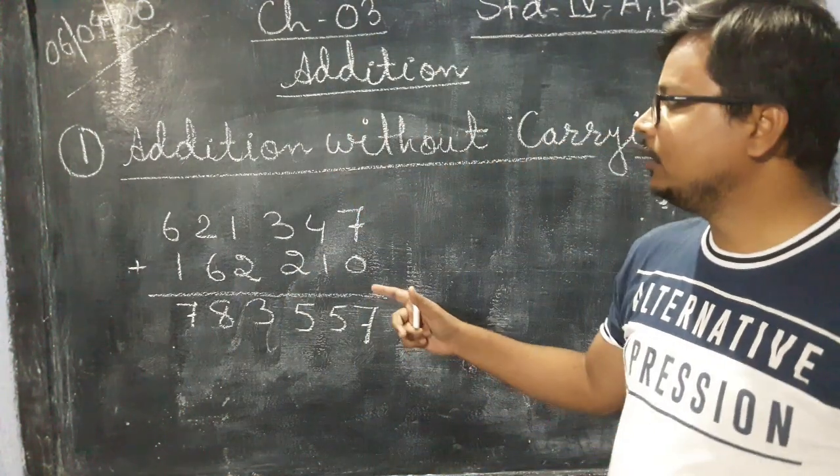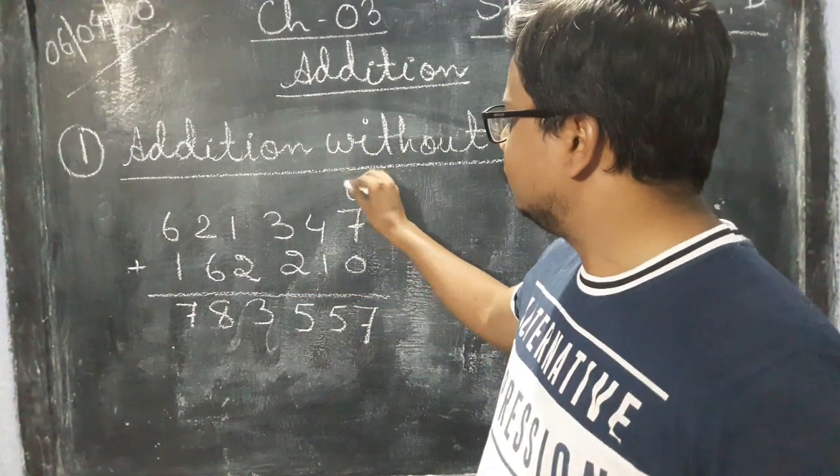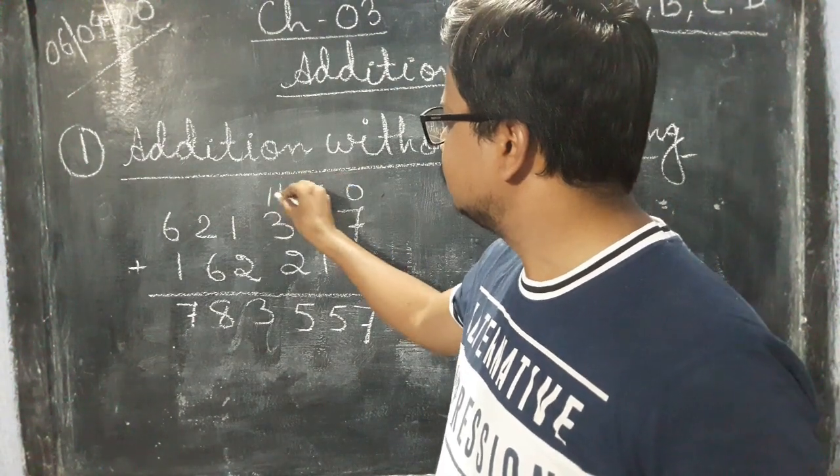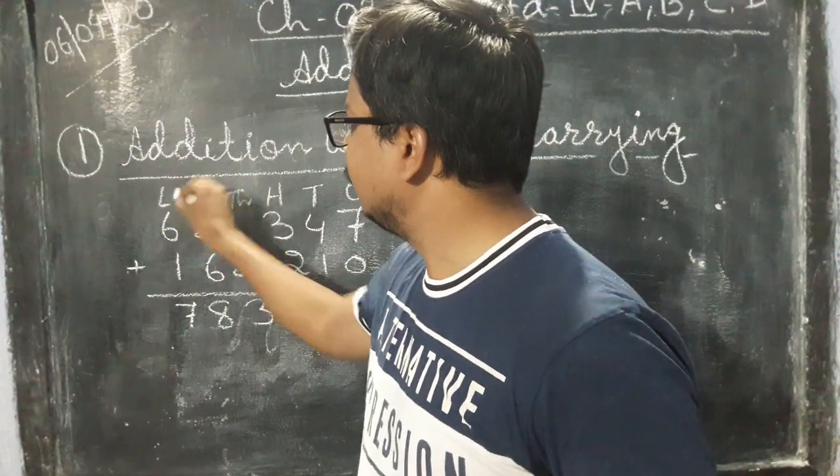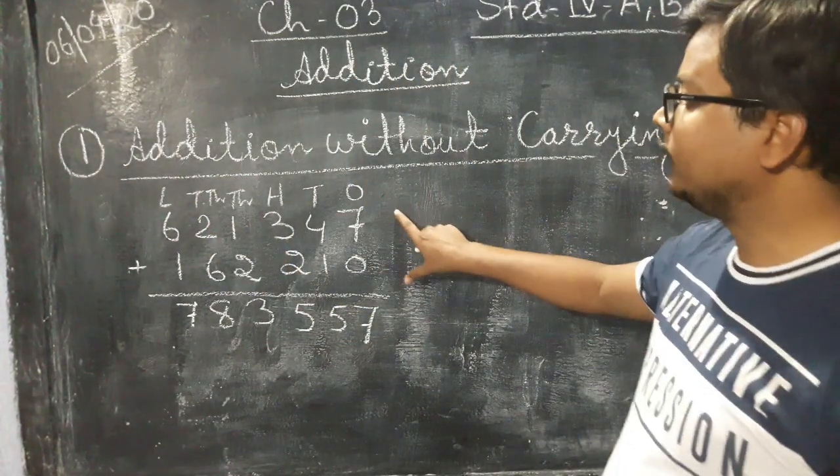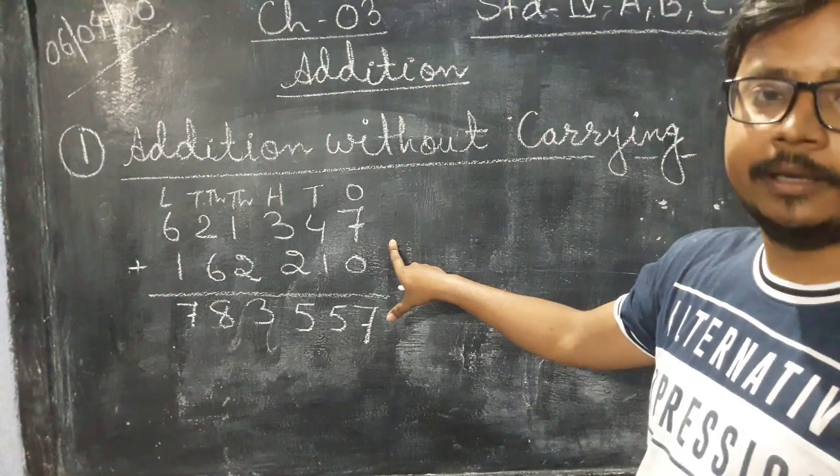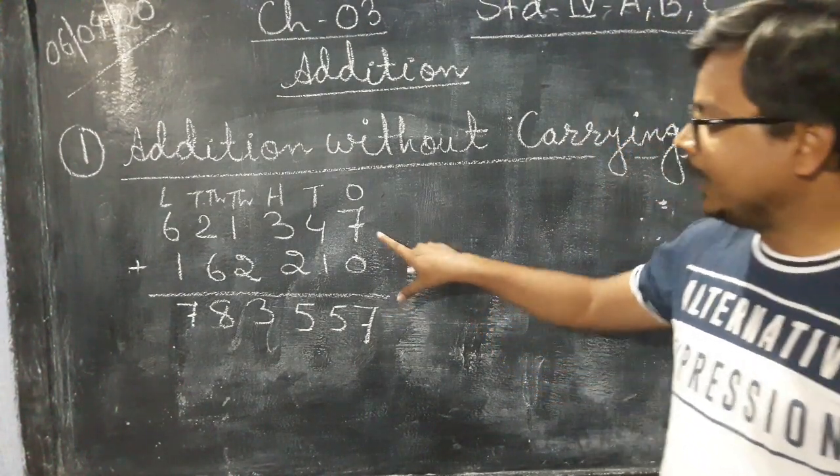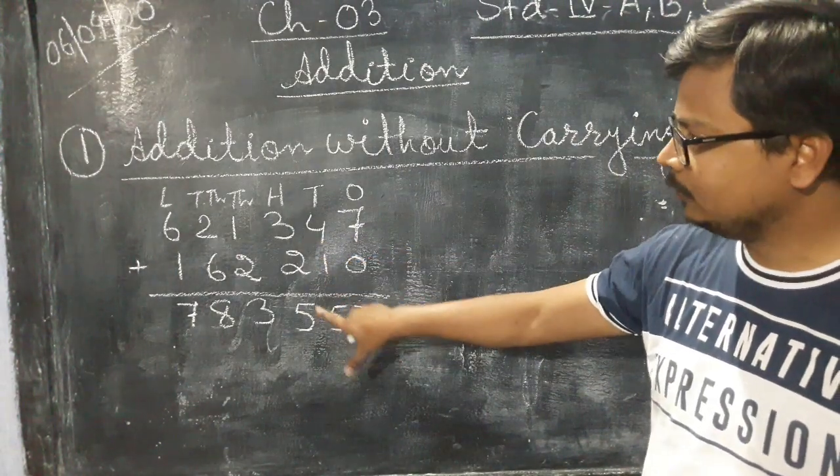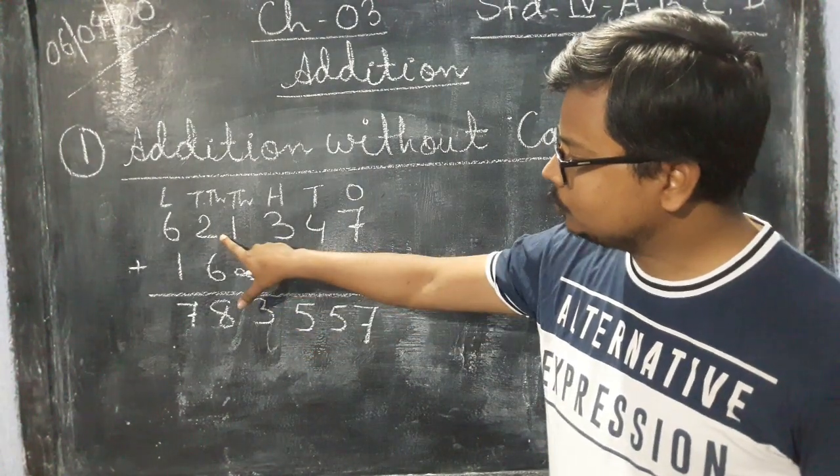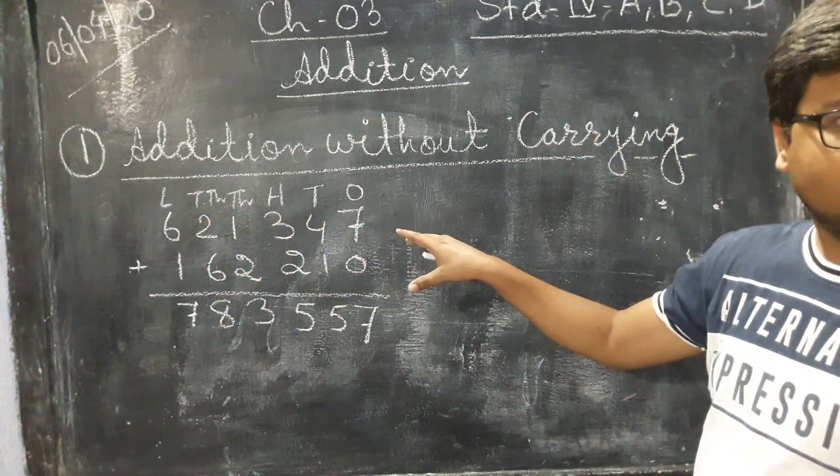So here you can see already I have written, I have solved addition for you all. See the place value: ones, tens, hundred, thousand, ten thousand and lakhs. In this question you can see it is written about addition without carrying, means in this question you don't have to carry for addition. Like 7 plus 0 it is 7, 4 plus 1 it is 5, 3 plus 2 it is 5, 1 plus 2 it is 3, 2 plus 6 is 8 and 6 plus 1 is 7. So you can solve it easily, is it clear?